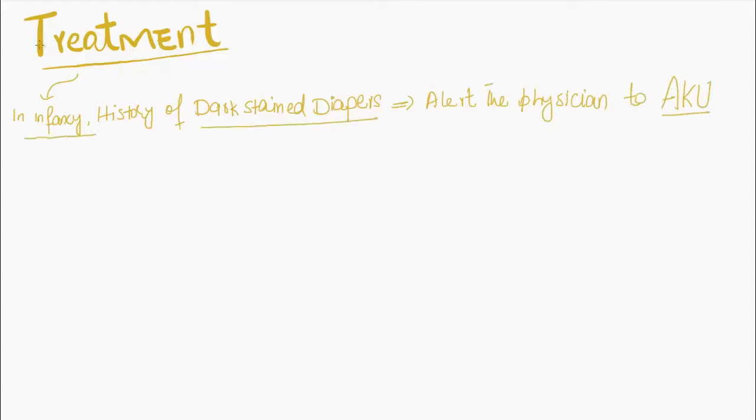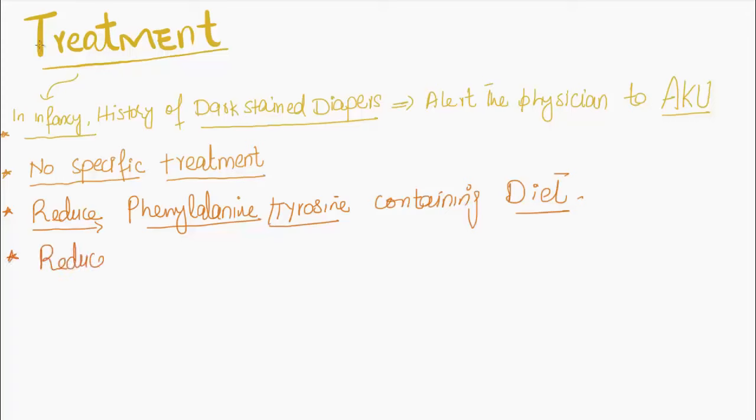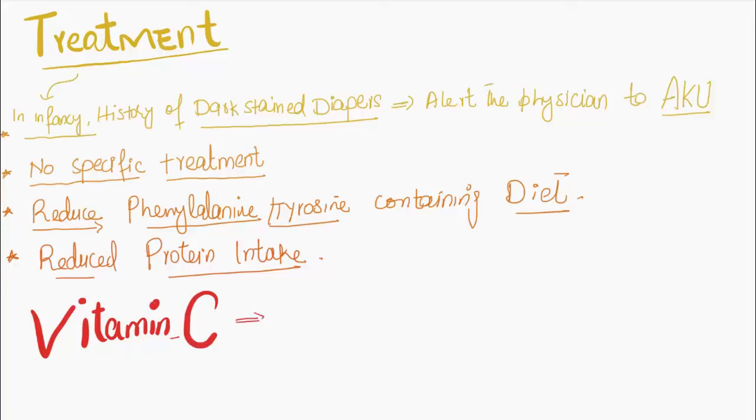Treatment: In infancy, history of dark-stained diapers should alert the physician to alkaptonuria. Alkaptonuria does not require any specific treatment. However, reduced phenylalanine and tyrosine-containing diet and reduced protein intake are helpful. Vitamin C in large doses, like one gram per day for older children and adults, inhibits the conversion of homogentisic acid into alkaptons.